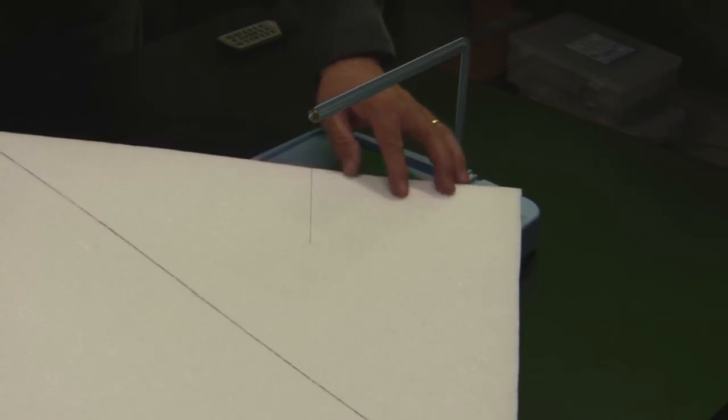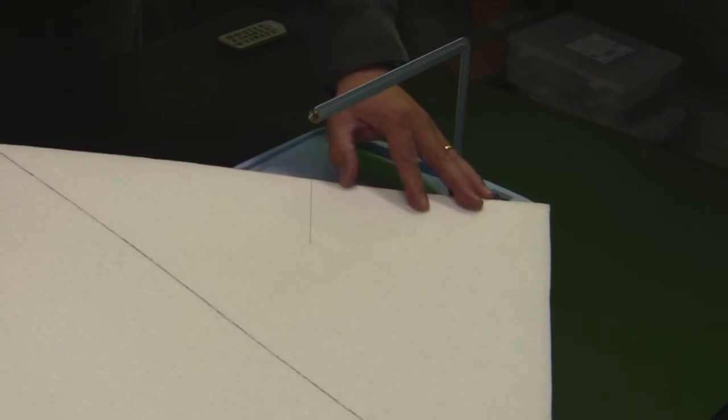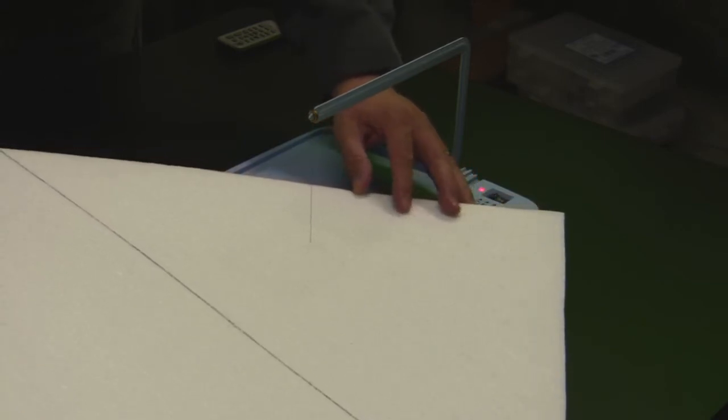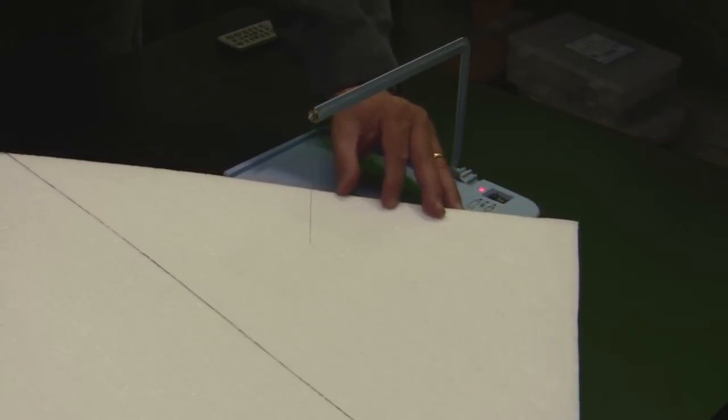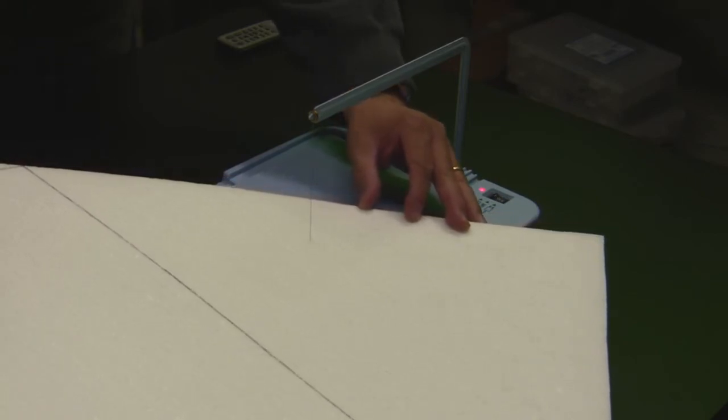The hot wire will leave a nice clean cut on the foam because it's actually melting through it. You want to be very careful not to touch the wire because I believe it gets up to a temperature of close to 400 degrees.